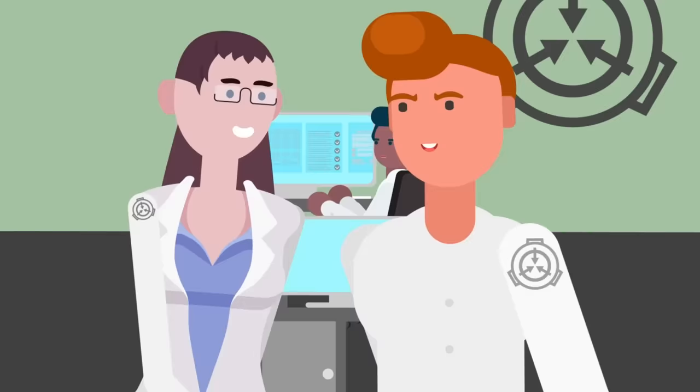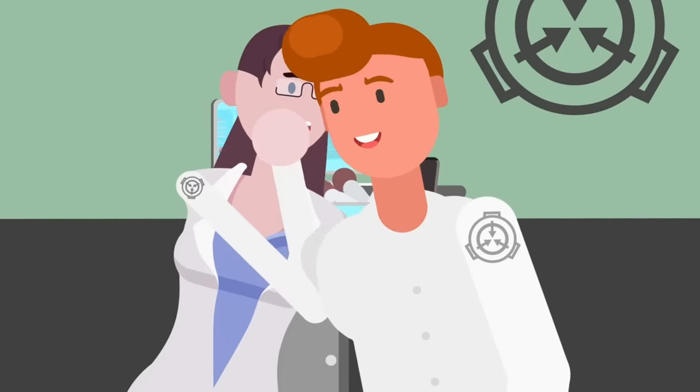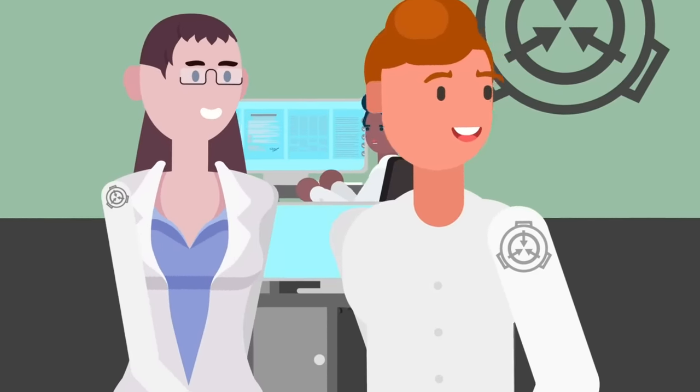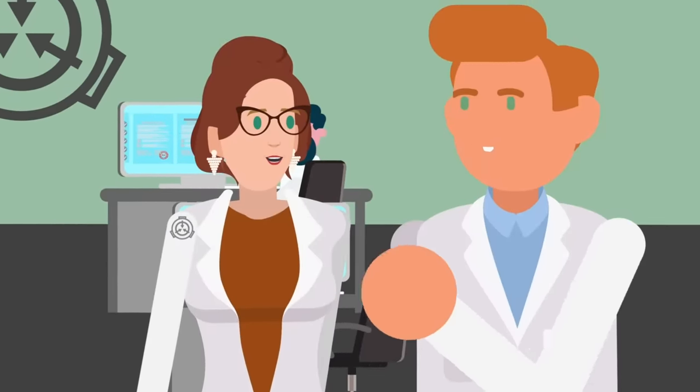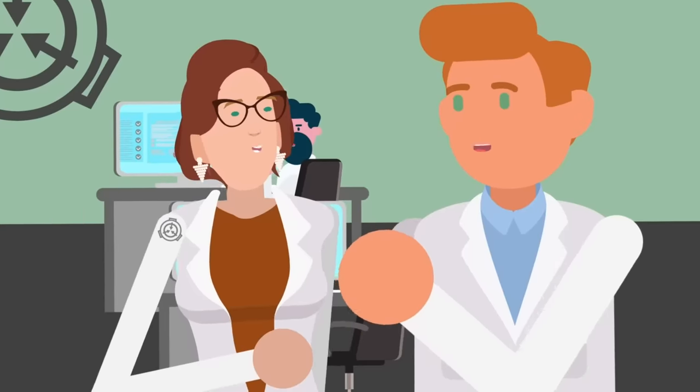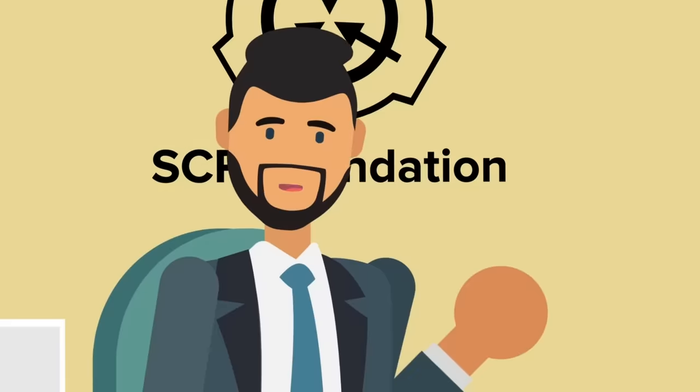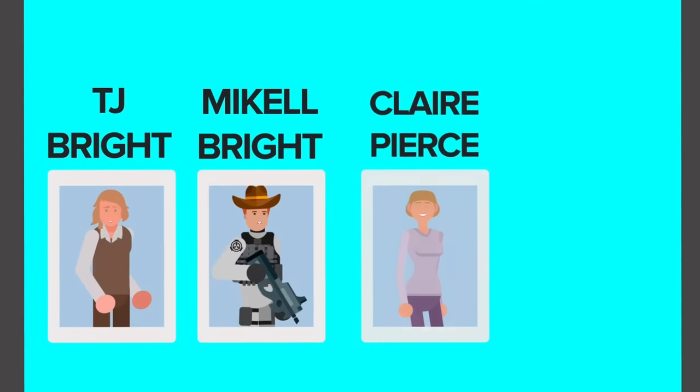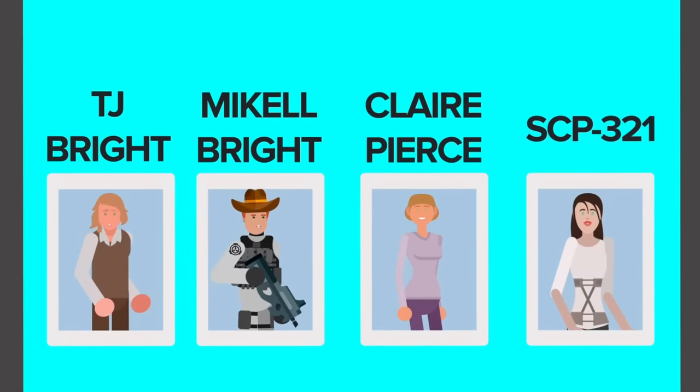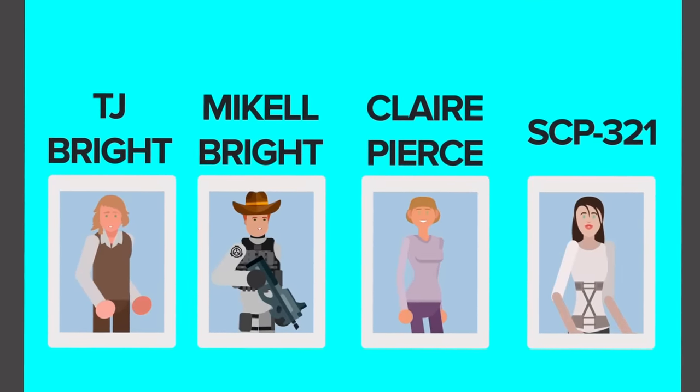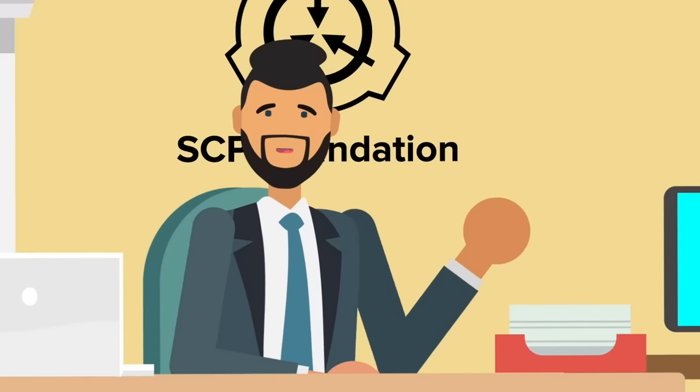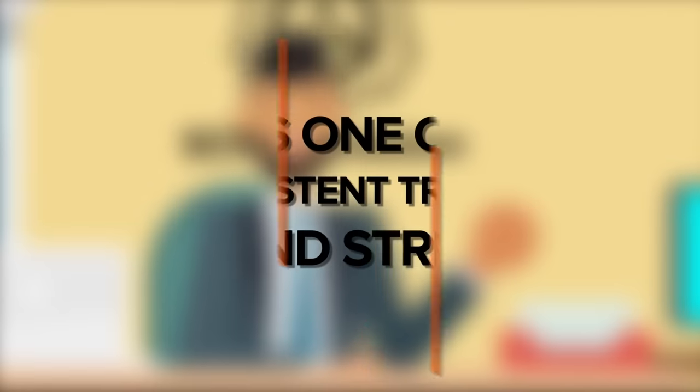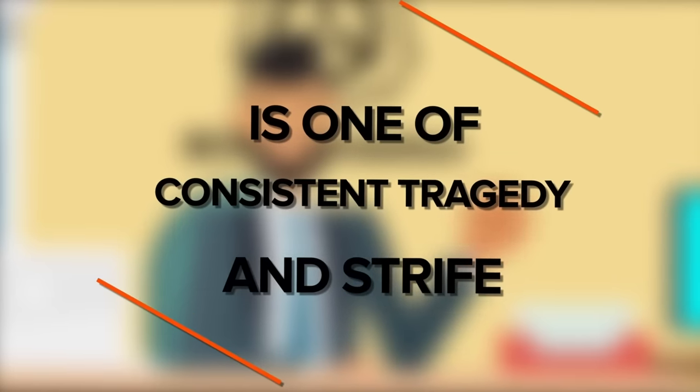Bright was a name that carried a lot of weight around the Foundation even before Jack Bright signed up for service. His parents, Dr. Adam and Evelyn Bright, were both Foundation personnel. His siblings were incredibly numerous, and the ones we are aware of are TJ Bright, Michael Bright, Claire Pierce, and a nameless sister now known only as SCP-321. Sadly, you'll soon see that the story of the Bright family is one of consistent tragedy and strife.